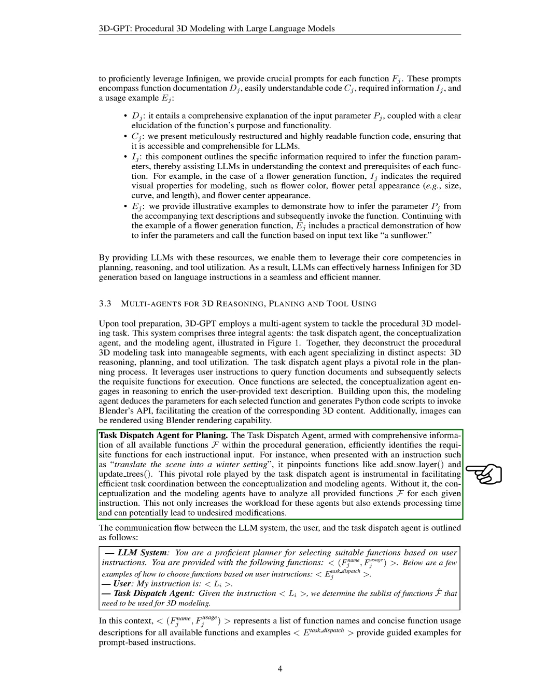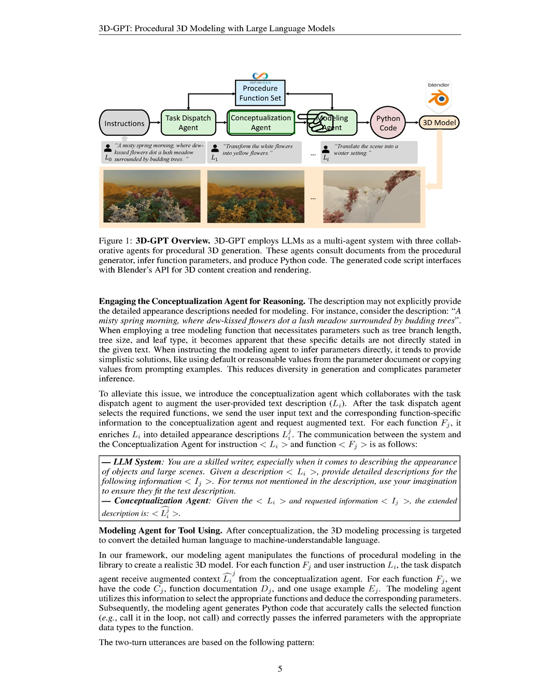The conceptualization agent is used when the description does not provide enough detail for modeling. For example, a description like 'a misty spring morning, where dew-kissed flowers dot a lush meadow surrounded by budding trees' does not provide specific details like tree branch length, tree size, and leaf type. The modeling agent, when left to infer parameters directly, tends to provide simplistic solutions. To solve this problem, the conceptualization agent works with the task dispatch agent to enhance the user's text description. After the task dispatch agent selects the required functions, the user's input text and the corresponding function-specific information are sent to the conceptualization agent, which then provides an enriched text.